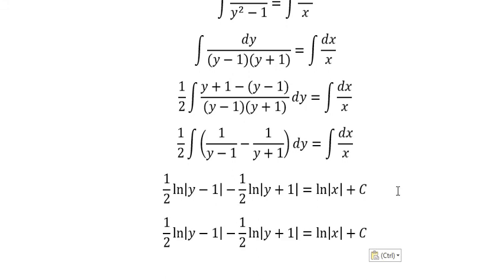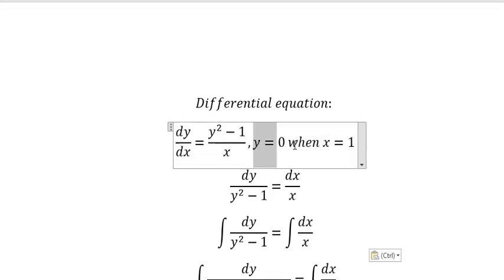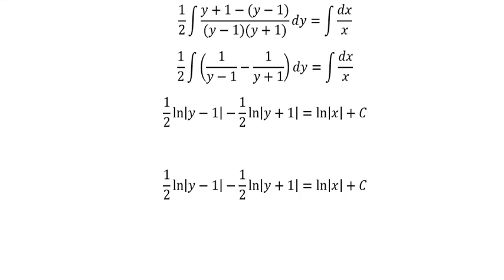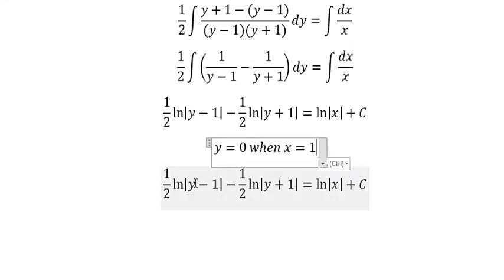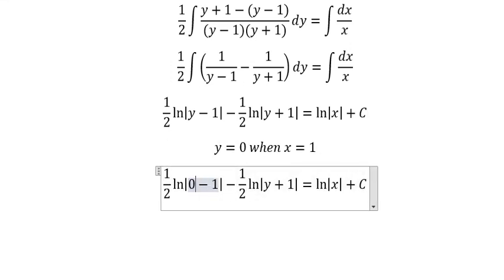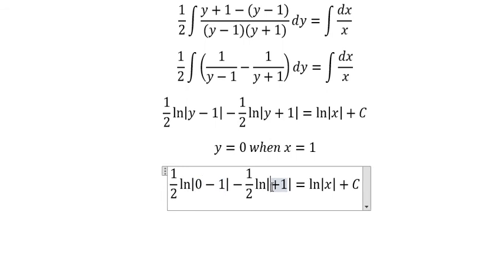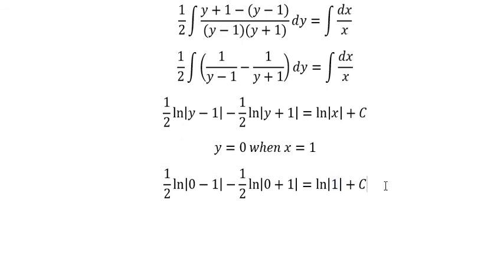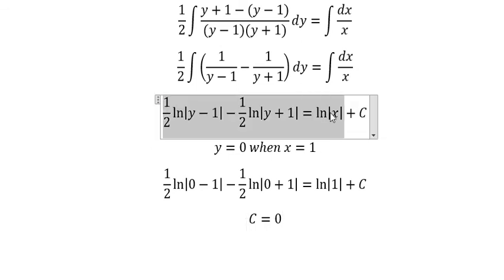Next, we have initial conditions. So we put number 0 in here, and number 1 goes in here. We know that ln of 1 equals 0, so we can put 0. Therefore c equals 0. And this is the final answer.